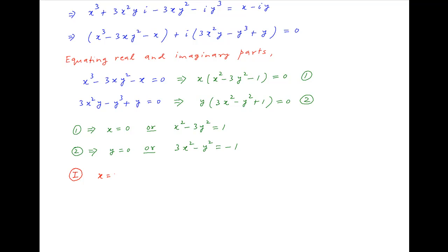Therefore, the first possibility is that x is equal to 0 and y is equal to 0. And therefore z, which is equal to x plus iy, is equal to 0.